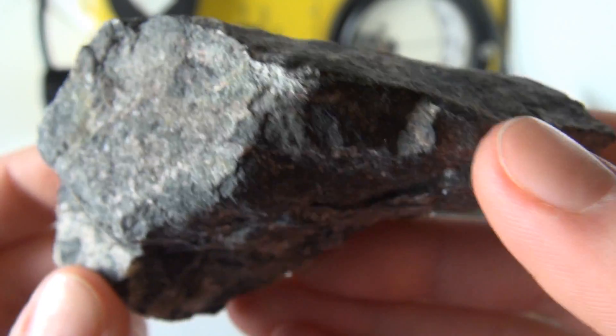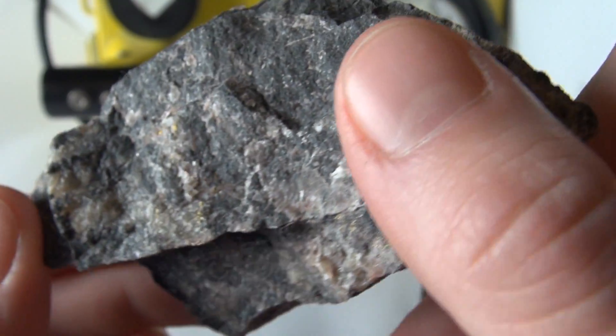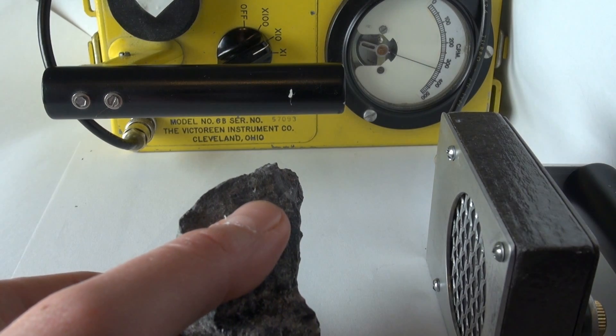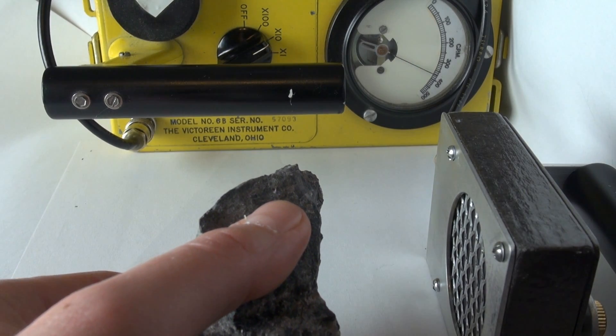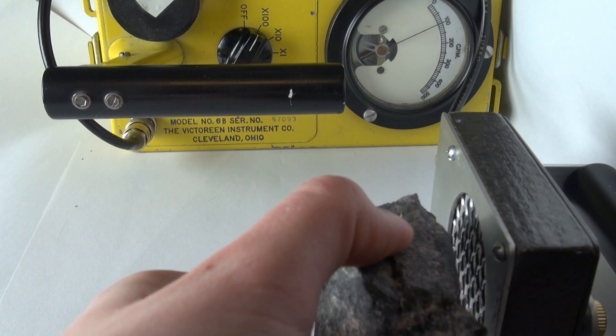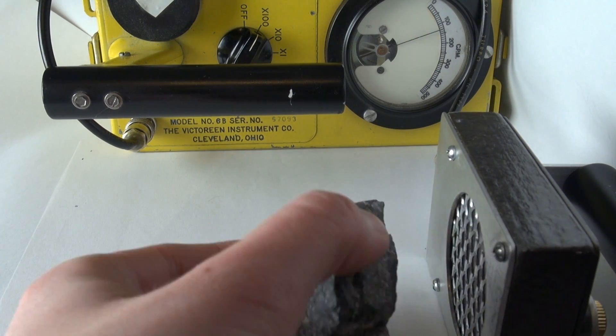Here's an example of that. This is pitchblende uranium ore contained in granite host rock, also some pyrite and other minerals in there, and you can see and hear that it's quite uniformly radioactive, but the majority of pitchblende is in one spot as we can hear now.